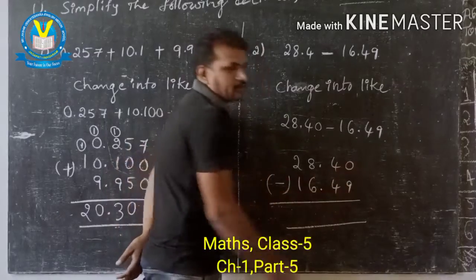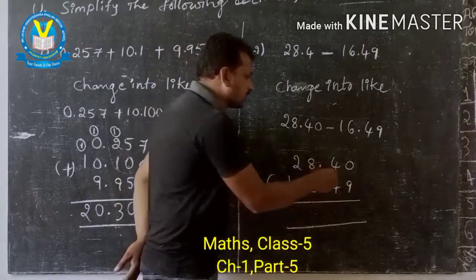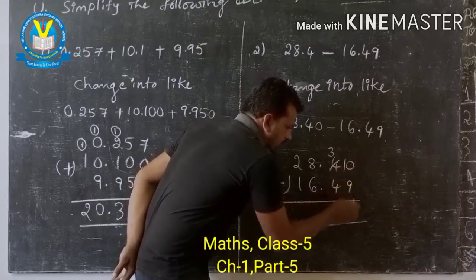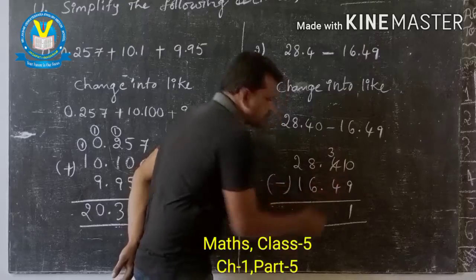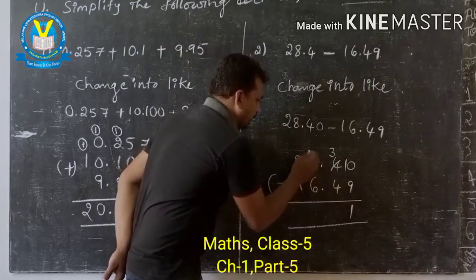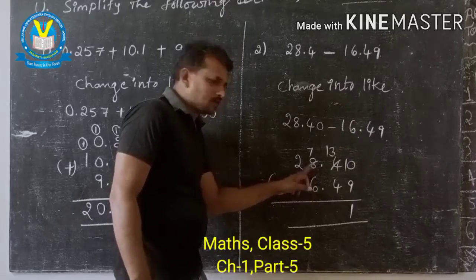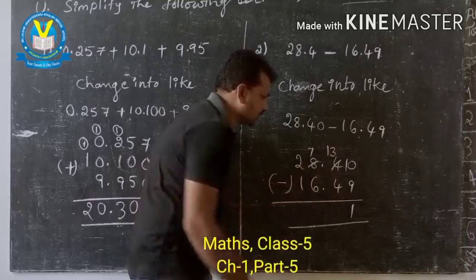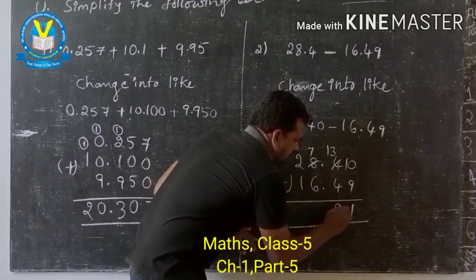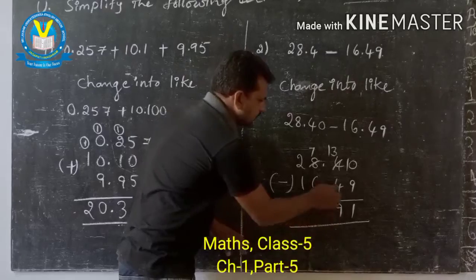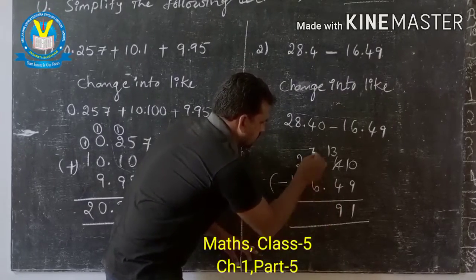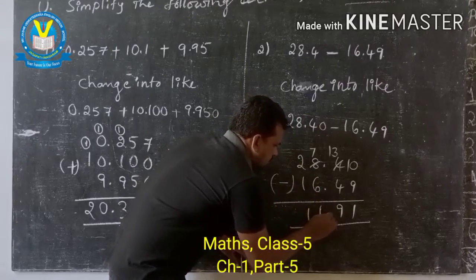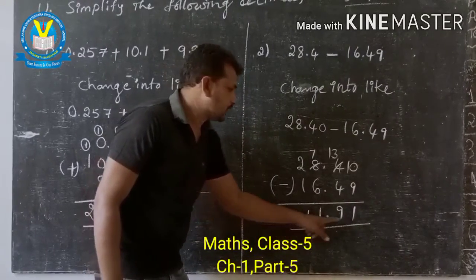Now subtraction. 0 subtract 9 — not possible, so borrowing. 10 subtract 9 is 1. 3 subtract 4 — not possible, so borrowing again. 13 subtract 4 is 9. Next, 7 subtract 6 is 1. So the answer is 11.91.